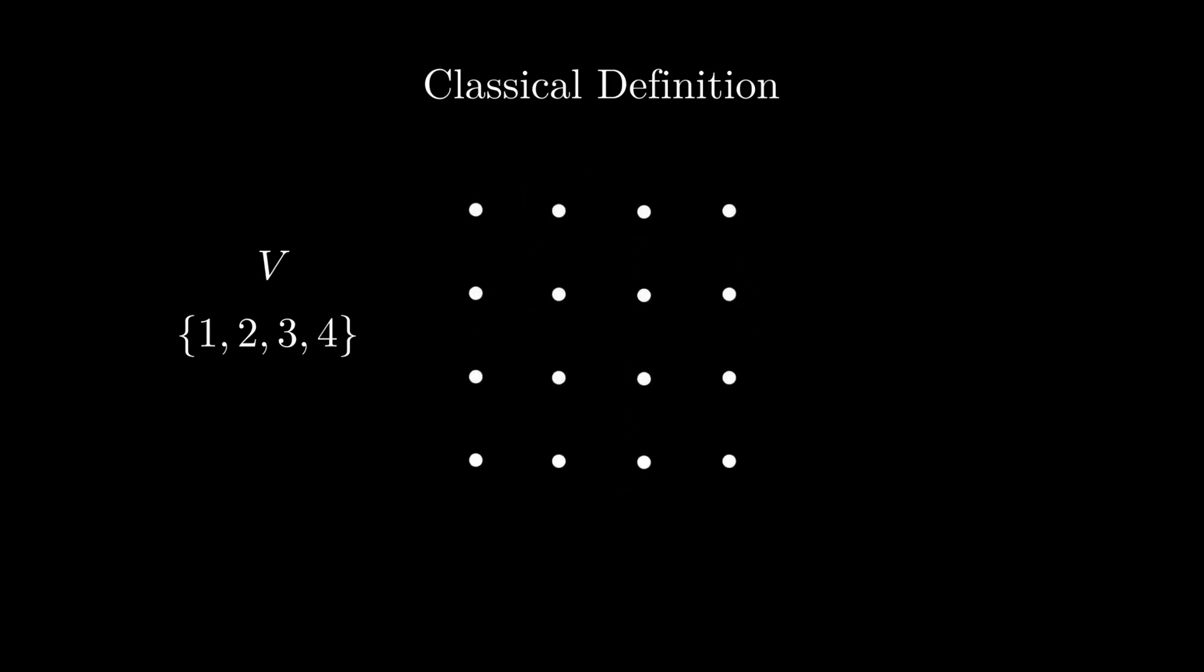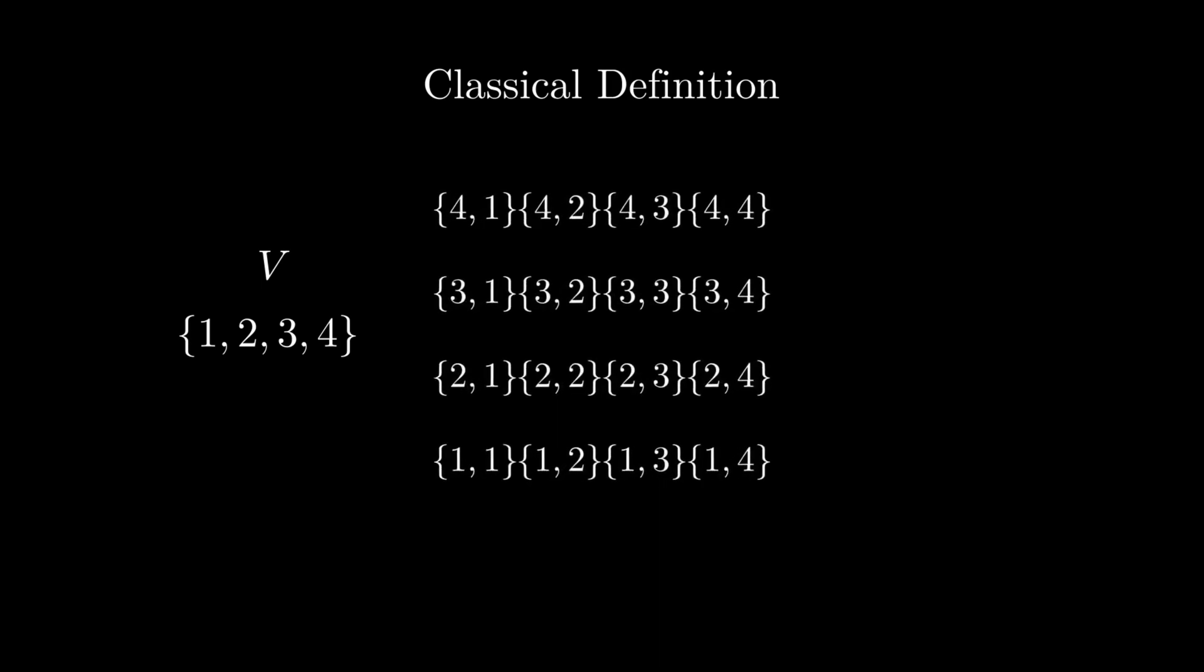To do this, we look at all the unordered pairs, where each coordinate is one of our vertices. The pair tells us which two vertices are being connected by an edge, and to form the edge set we just choose as many of these pairs as we want.